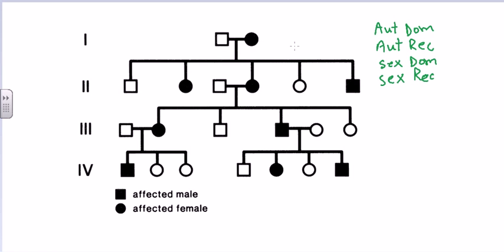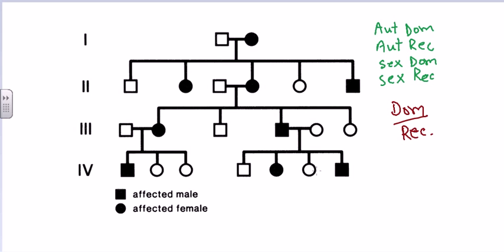The first important thing when solving these problems is to determine whether the trait is dominant or recessive. If it is a dominant trait, then if one parent is infected it will definitely be transferred to the progeny. In recessive, this may not be the case. Looking at this pedigree, in each generation if the parents are infected their offspring are also infected, which tells us it is a dominant trait.